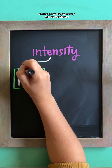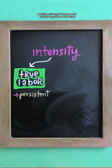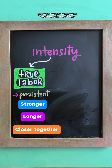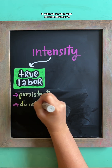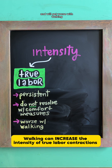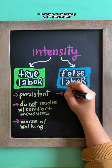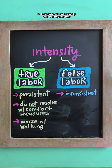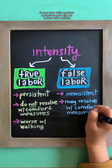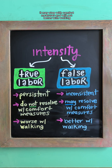In true labor, the intensity will be persistent, getting stronger, longer, and closer together over time. It will not resolve with comfort measures and will get worse with walking. In false labor, the intensity will be inconsistent, sometimes weak and sometimes strong. It may stop with comfort measures and will get better with walking.